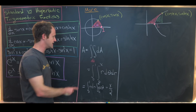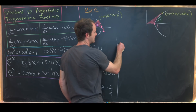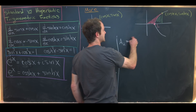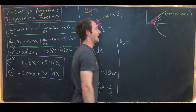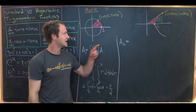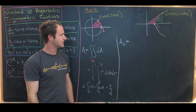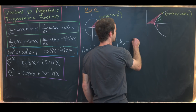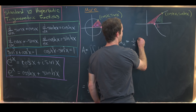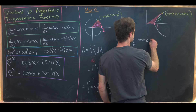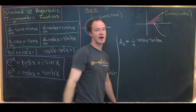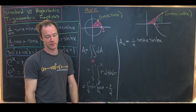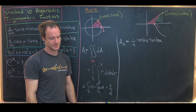Since we're finding two areas, I'm going to rename the circle sector area as Area 1, and the hyperbola sector as Area 2. Area 2 equals the area of the entire triangle minus the area of the green part. The area of the triangle is one half base times height, which is one half hyperbolic cosine of x times hyperbolic sine of x. The base is hyperbolic cosine and the height is hyperbolic sine.